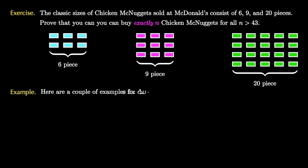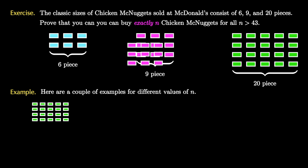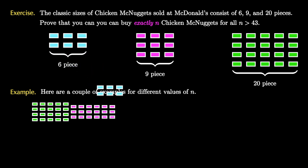Here are a couple of examples for different values of n that you can buy. If you take one 20-piece Chicken McNuggets and two different nine-piece Chicken McNuggets along with a six-piece Chicken McNuggets, then you have purchased exactly 44 Chicken Nuggets.